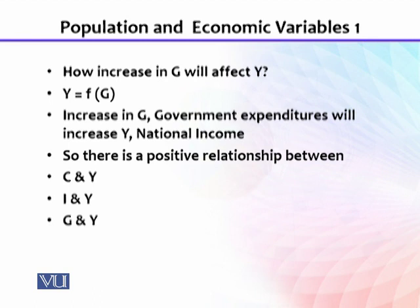The third factor is government expenditures, which also have a positive relationship with the level of national income. So there is a positive relationship between consumption and national income, between investment and national income, and between government expenditures and national income.